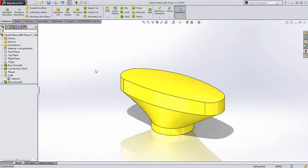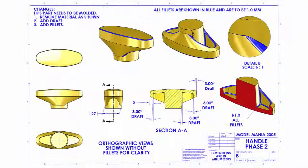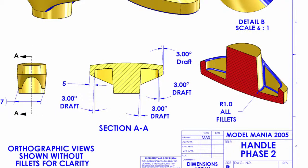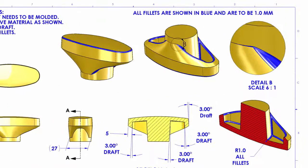Now that we've finished and shown three different ways to create this part, let's take a minute and look at the changes that would have been presented to us. The changes look quite drastic, though they're actually quite simple to accomplish. The first thing we'll notice is that three degrees of draft have been added to several of the faces. Looking at Section AA, we can see that the inside of the part has been hollowed and also includes this three degrees of draft. There are also several fillets added — we'll look at those a little bit later.